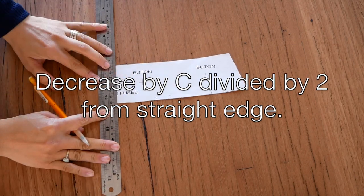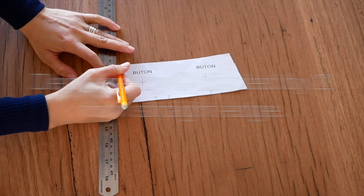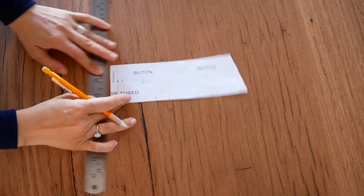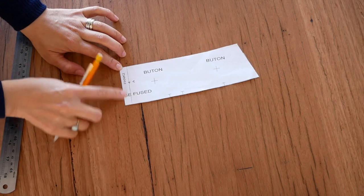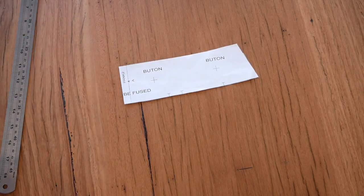Mark C divided by 2 from the straight edge, draw a line, and cut along the line to get your adjusted belt pattern. Repeat this same step for the back belt piece, but remember for the back there's no pocket, so you don't have to worry about inserting that pocket piece.